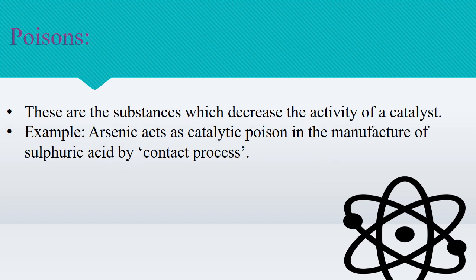A catalyst can also be poisoned. Poisons are substances which decrease the activity of a catalyst. For example, arsenic acts as a catalytic poison in the manufacturing of sulfuric acid by the contact process. You need to be careful that arsenic-related impurities are not present when this process is taking place. To summarize: substances which decrease the activity of a catalyst are known as poisons, and substances that increase the activity are known as promoters.